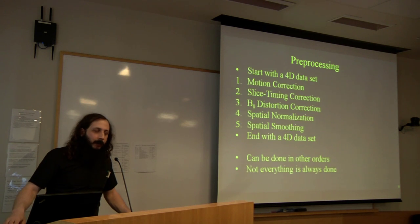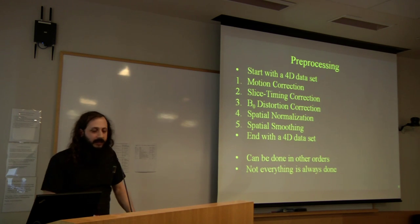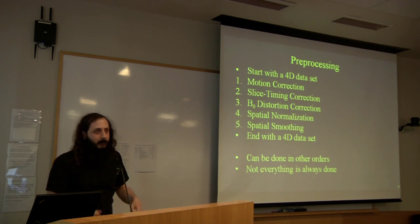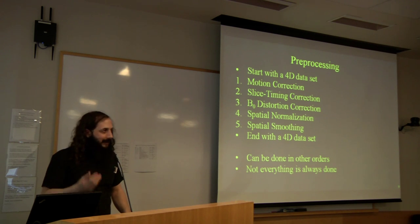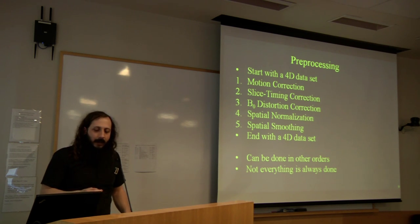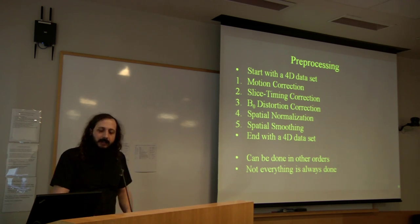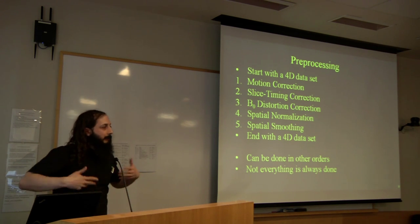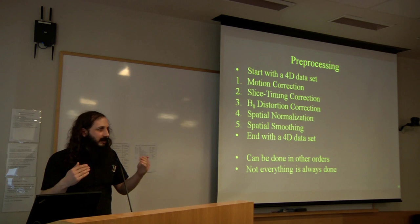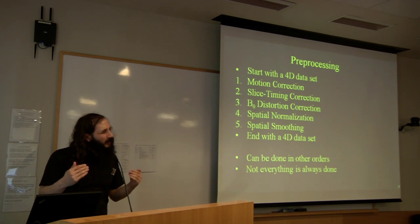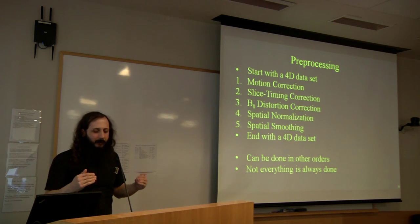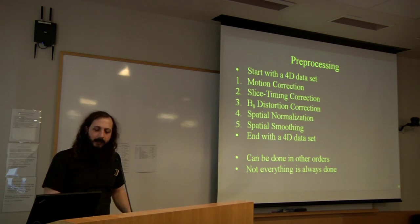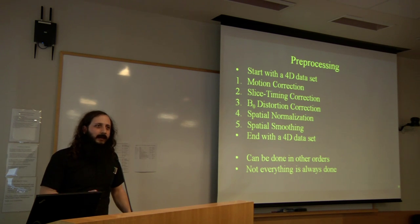The pre-processing steps are: starting with a 4D dataset, we perform motion correction, slice timing correction, B0 distortion correction, spatial normalization, and spatial smoothing, ending with a pre-processed 4D dataset. These steps can be done in various orders with different trade-offs. Not all of these steps are done in every analysis — it depends on the hypotheses and the accuracy required.